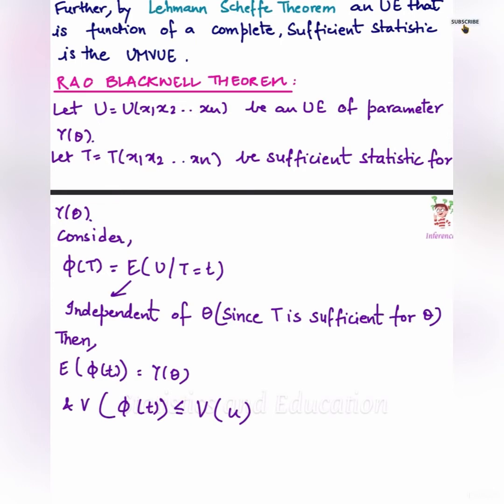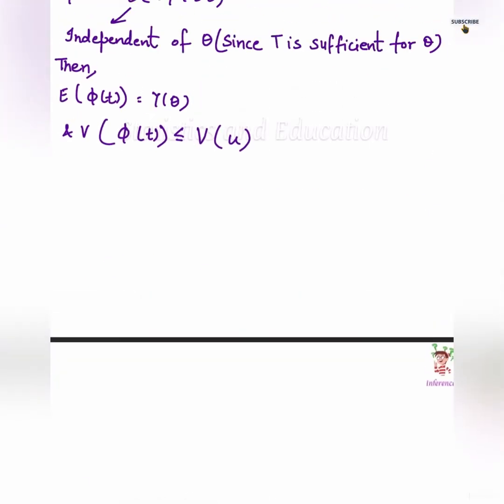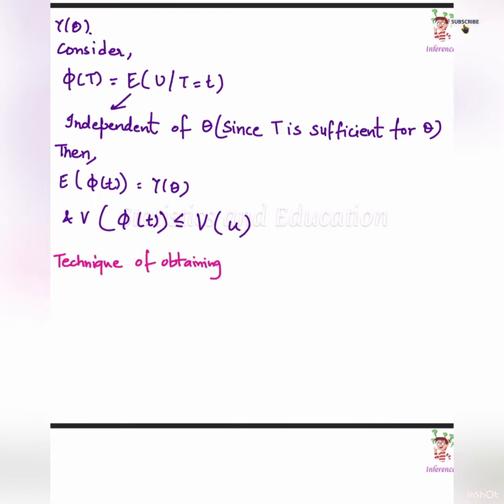We have already seen in Rao-Blackwell theorem, we were using an unbiased estimator and a sufficient estimator to obtain an estimator which is unbiased and has minimum variance in the class of all unbiased estimators. And then we discussed that if the estimator T is sufficient as well as complete, then we can form a unique minimum variance unbiased estimator which is the best.